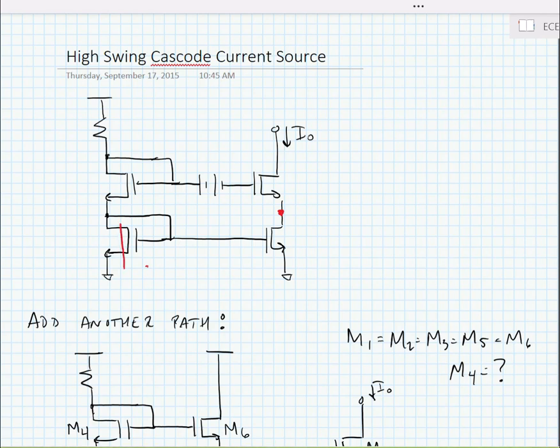So let's look at a KVL loop going through the two reference transistors over to this red dot here. We know that each of these transistors needs a Vov plus a Vth, which is equal to their Vgs voltage.